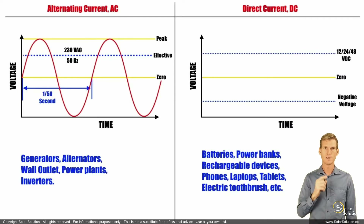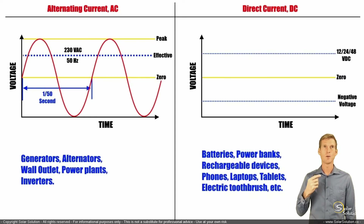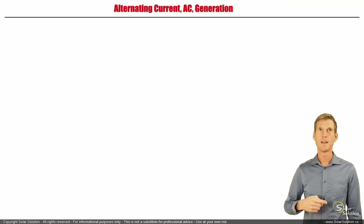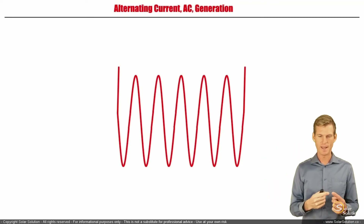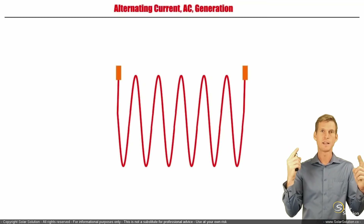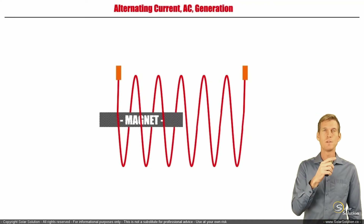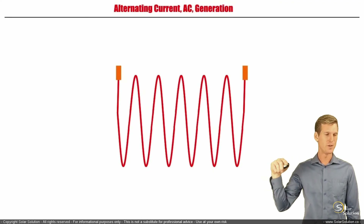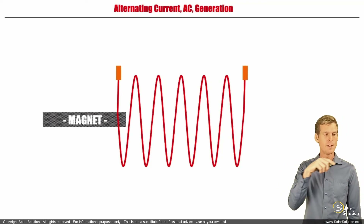Now let's look at the operating principle behind AC — why does the current fluctuate and how is AC produced? To make AC current, we take a conductor — normally a copper wire — and wind it into a coil. We add terminals to the ends so we can connect other wiring. Then we take a magnet, either a permanent magnet or an electromagnet, and move it from one side to the other side through the coil, then move it back again.